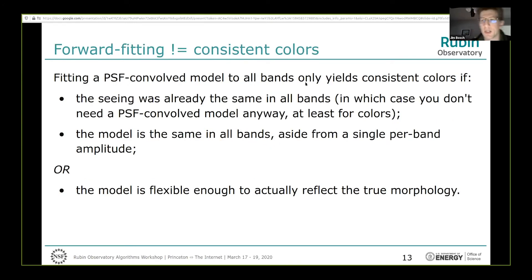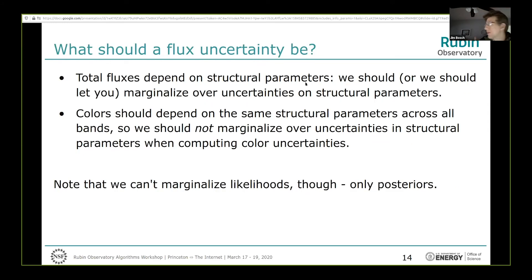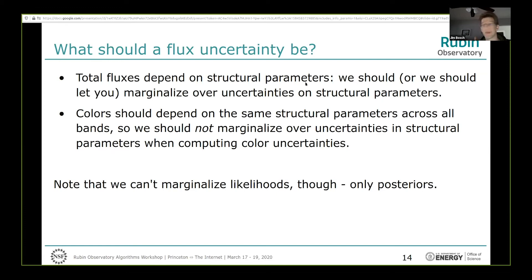A few words on flux uncertainties. For total fluxes, uncertainties depend on structural parameters, and we should let catalog users marginalize over uncertainties in structural parameters to estimate total flux uncertainty. But colors should depend on the same structural parameters across all bands, so we shouldn't marginalize over those parameter uncertainties when computing color uncertainties. Our uncertainty estimates are derived mostly from photon noise and may not capture all errors. And you can't marginalize likelihoods — only posteriors — so something has to give. Galaxy photometry is at some level impossible, and it's all a game of trade-offs.